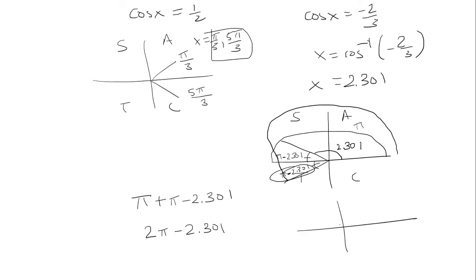So another way to think about this is if this thing is 2.301, so is this thing. And so you would just take 2 pi, the entire thing, and then take away the 2.301 to land over here.